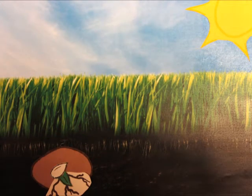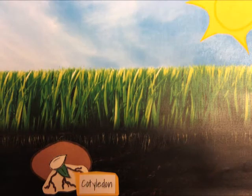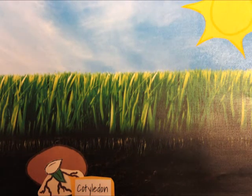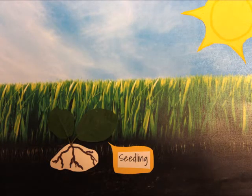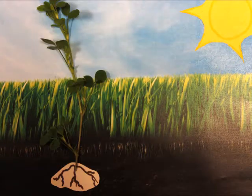A cotyledon, or the first leaf, appears. A seedling then sprouts above the ground. With more sunshine, the plant grows.